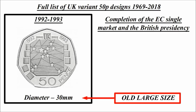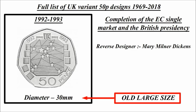1992 to 1993: the completion of the EC single market and the British presidency. The reverse designer was Mary Milner Dickens and the mintage figure was 109,000.